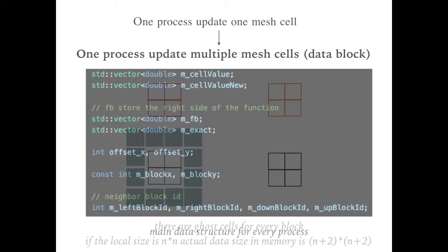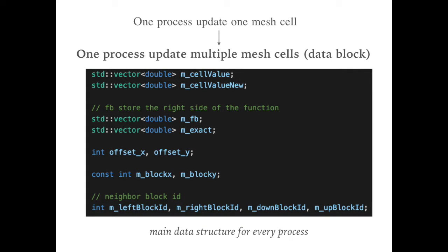Let's dive into the actual program. This is the main data structure used in every MPI process. New cell value and cell value are arrays to store the data block and the ghost values. For every iteration, the new cell value will be updated based on the cell value. The ghost value stored at the cell value. The array will be updated by the neighbor data blocks.